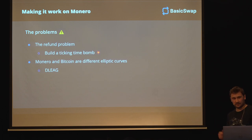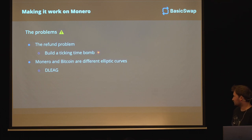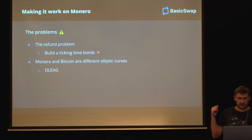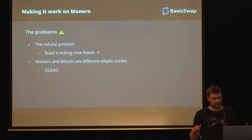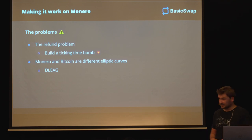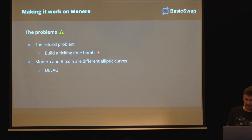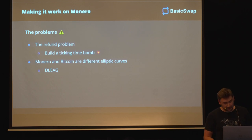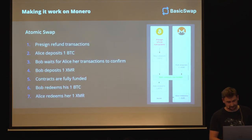The first problem he addressed was the refund problem. And the second problem is that Monero and Bitcoin are on different elliptic curves. So they have widely different cryptography and we need some kind of way to marry them. The refund problem he basically fixed by building a tiny ticking time bomb. And the fact that they're on different elliptic curves is solved by using DLEQs.